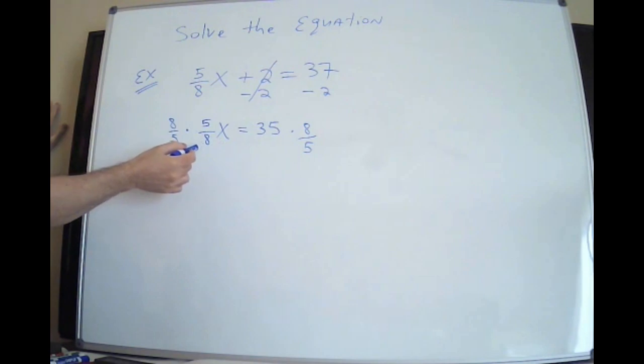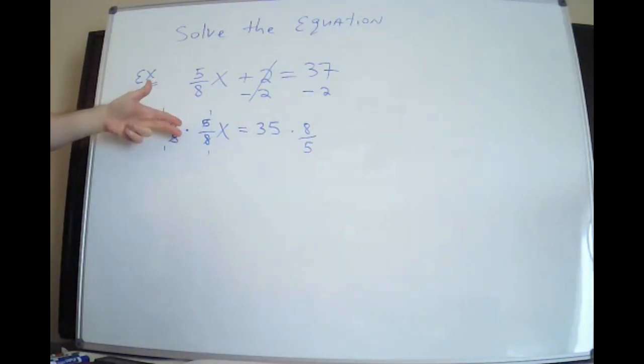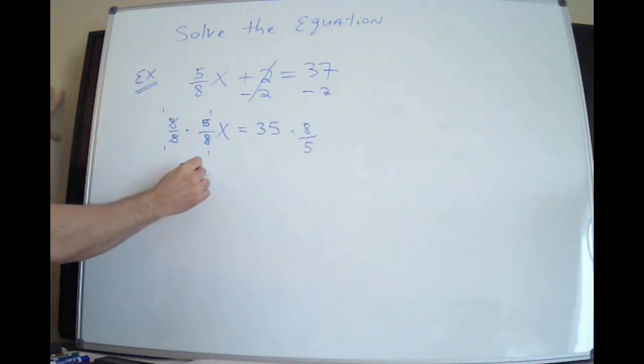So this is basically what you – this little trick is whatever number is in front of that x, you flip it over, and you multiply both sides by that. Why did I do that? The 8s will cross out. 8 divided by 8 is 1. 5 divided by 5 is 1. You see how I crossed them all out? Whatever number is in front of x, you flip it over, and you multiply both sides by that. That crosses them out on the left.